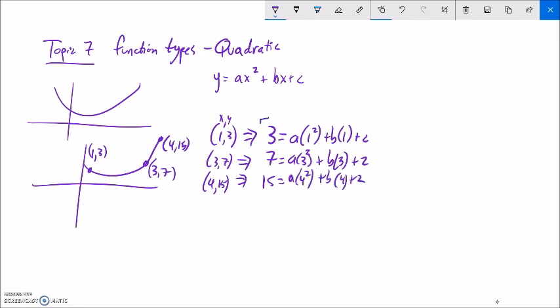So let me clean up the system a little bit. These are all just 1. So a plus b plus c is equal to 3. 3 squared is 9. So 9a plus 3b plus c is equal to 7. And then this one, 4 squared is 16. So 16a plus 4b plus c is equal to 15. So now I have the system to solve.